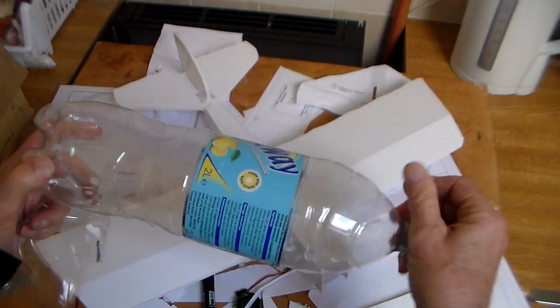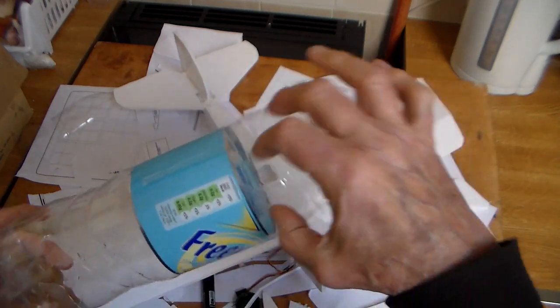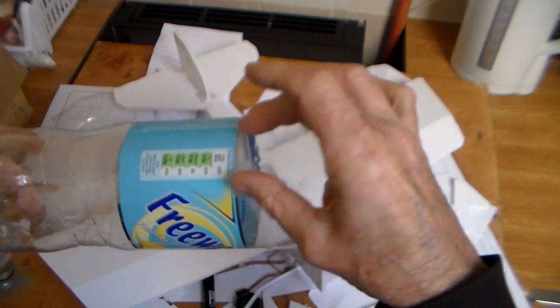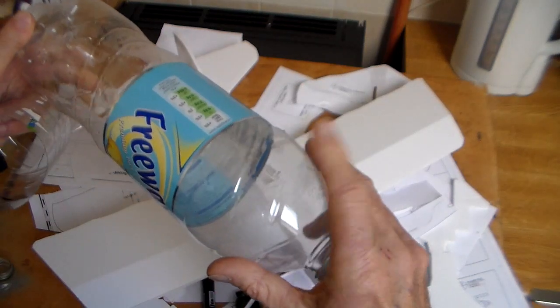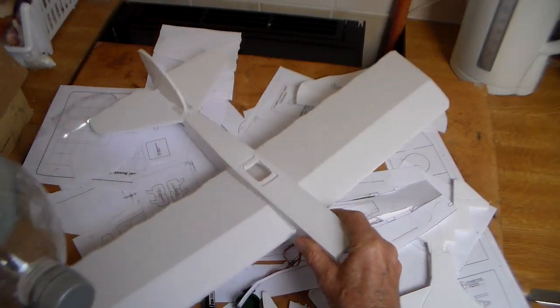So I came up with the idea of cutting up plastic bottles because they've got a nice curve here and if you get it just about right I think it will make a good clear canopy and give this rather plain looking model a bit of a better look.